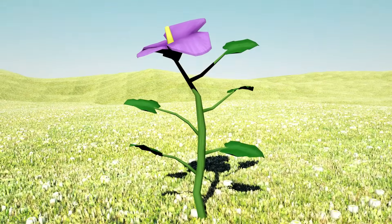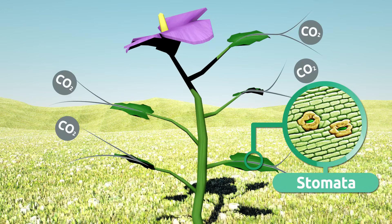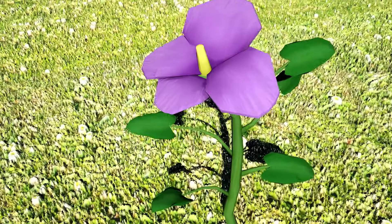Carbon dioxide is absorbed through tiny pores called stomata. And right here, in the leaves, is where photosynthesis actually takes place.